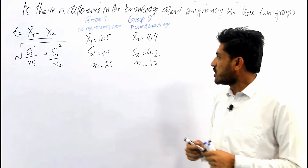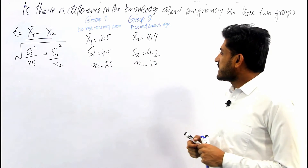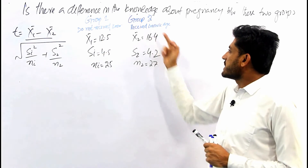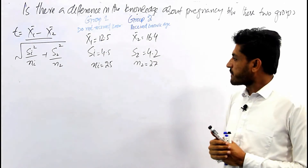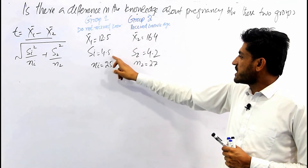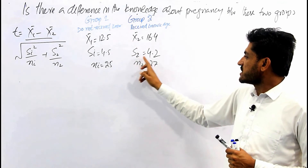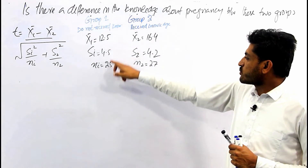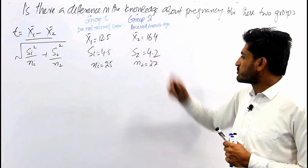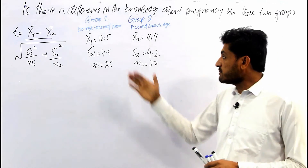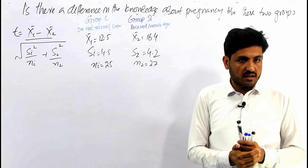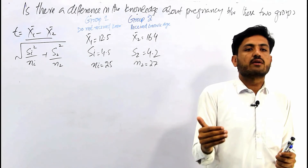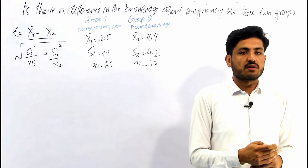The first group data: the mean of group one is 12.5 and the mean of group two is 16.4. The standard deviation of group one is 4.5 and the standard deviation of group two is 4.2. The sample size of group one is 25 and the sample size of group two is 27. Now we have to test: is there any mean difference between these two groups?